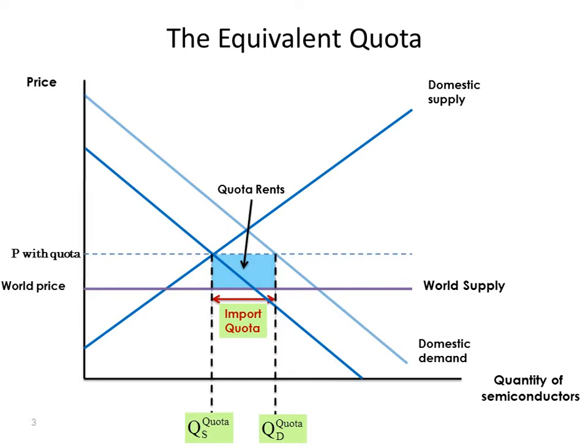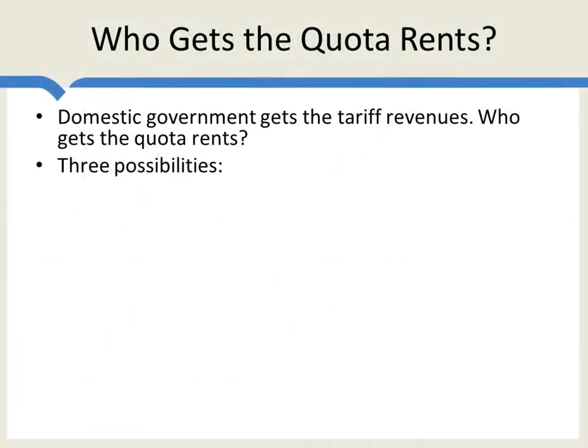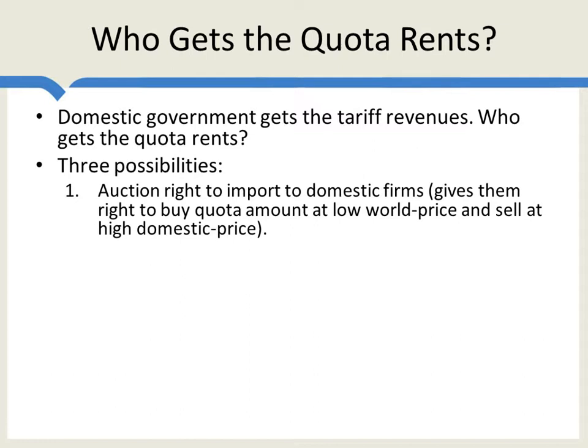Who earns these quota rents? With a tariff, the domestic government gets the revenues. There are three possibilities for quota rents. First, a government could auction the right to import to domestic firms — the right to buy the quota amount at the low world price and sell at the high domestic price. If auctioned, those revenues would flow to the government, making it perfectly equivalent to a tariff. Surprisingly, this is rarely used — Australia and New Zealand have done it occasionally, but around the world auctioning the right to import is quite rare.